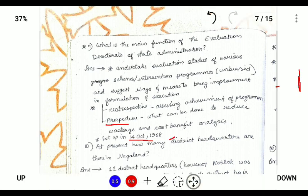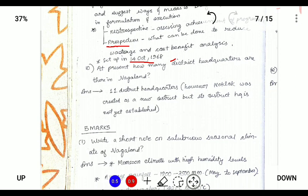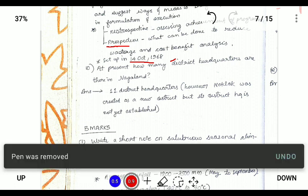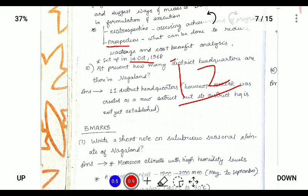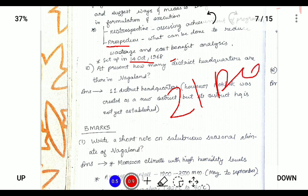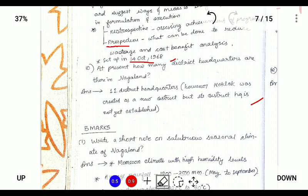At present, how many district headquarters are there in Nagaland? At present there are 12 district headquarters. The most recent district is Noklak district, which was added on 1st December 2017.